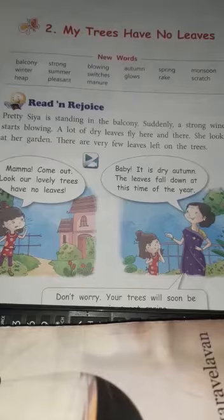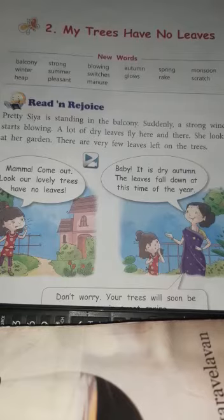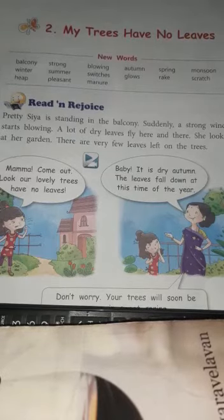This lesson revolves around the autumn season, when the leaves are generally shed and fall on the ground. In this lesson, the girl whose name is Sia is saying that her trees have no leaves.